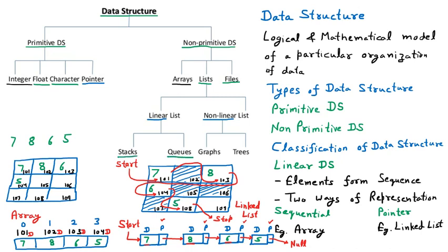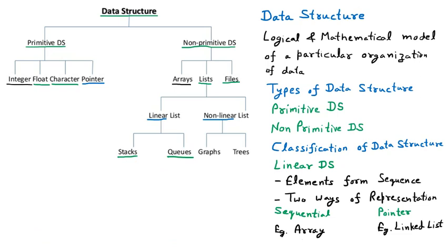Now we are starting with the stack. Stack is a LIFO — last in first out. To make you understand what a stack is, let us suppose we are having a few numbers: seven, eight, six, five. These are the numbers by which we are going to understand the stack. Now let us suppose that we are having a few copies or books.